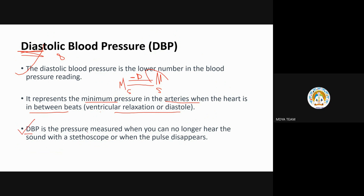Diastolic blood pressure is measured when you can no longer hear the sound through the stethoscope. When using a sphygmomanometer, as the mercury level comes down and you hear the first sound at a certain level — that is your systolic. When the sound disappears entirely, that mercury level is your diastolic.